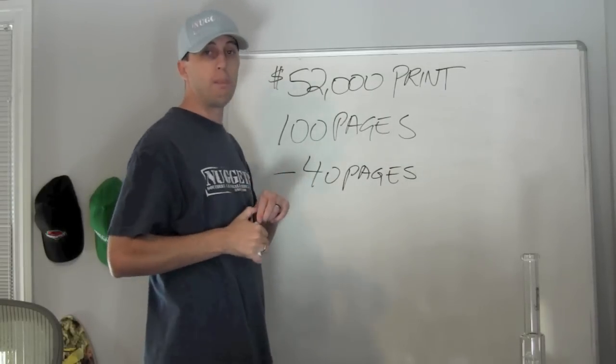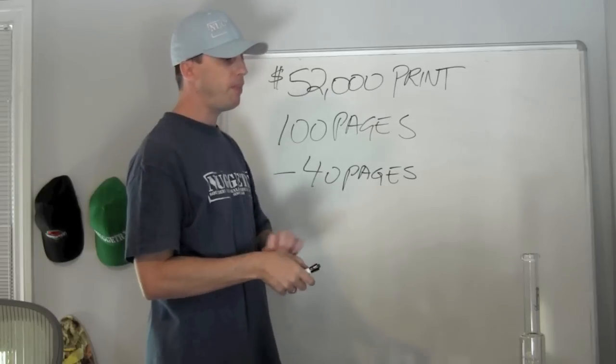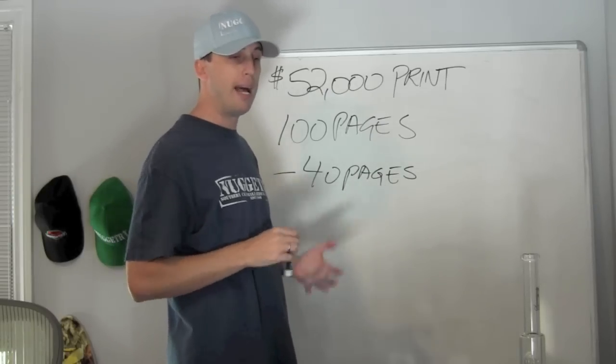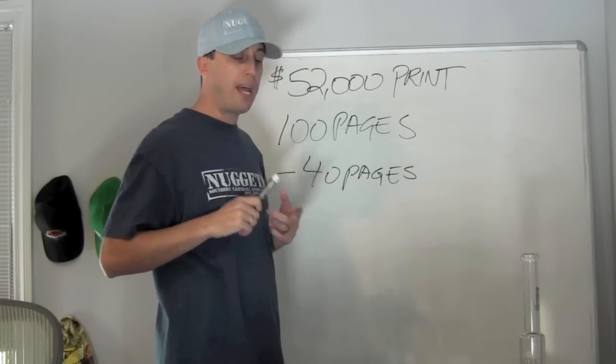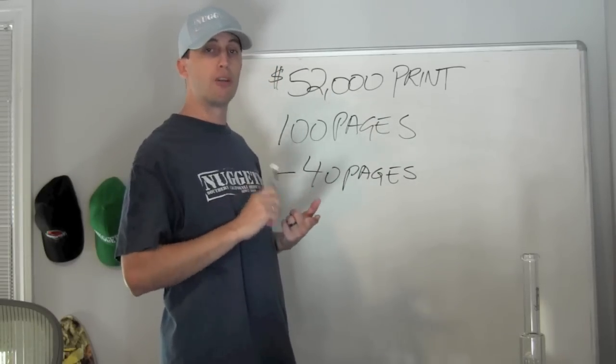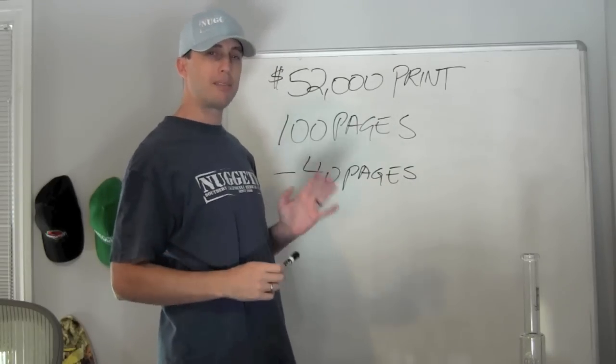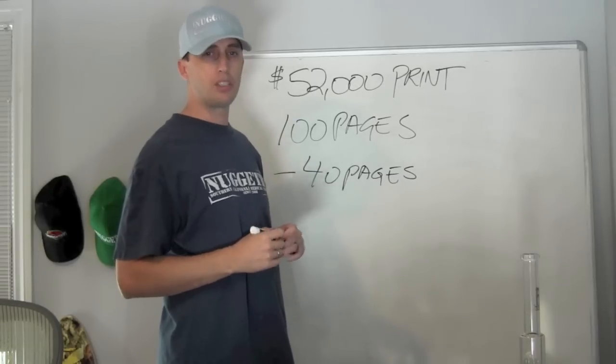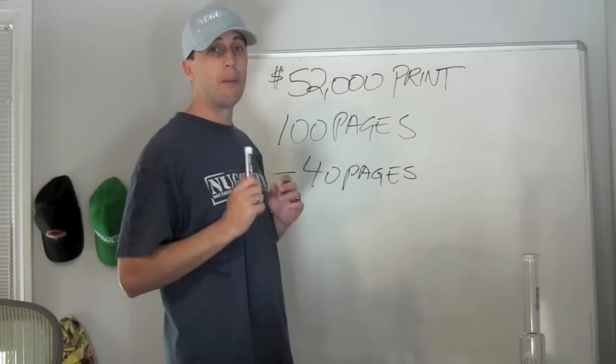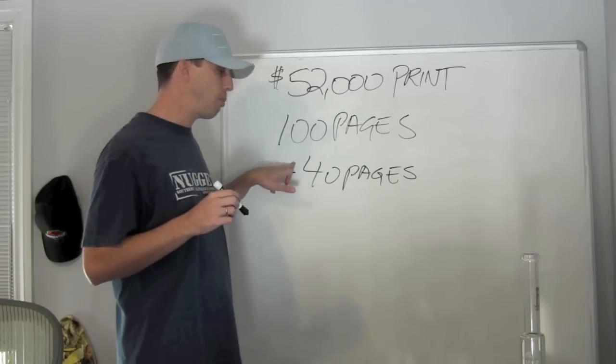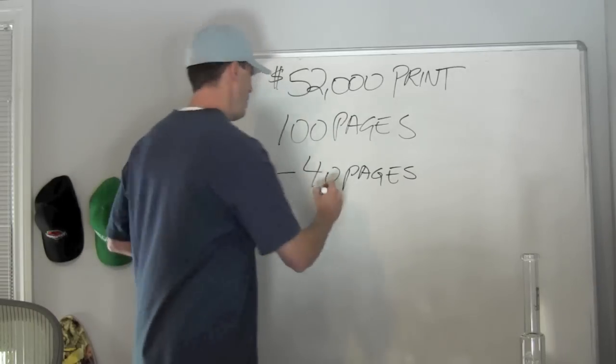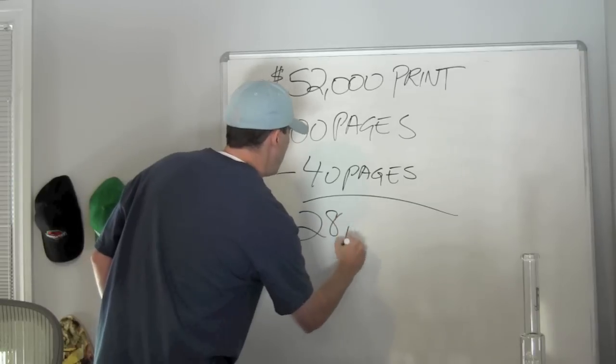We charge $1,000 for a full page ad. So you think we get $40,000 a month in ads, but we don't because most advertisers buy in bulk. They'll pay for a 3, 6, or 12 month package and they get a discounted rate. On average, we get about $750 per page, sometimes a little less, about $700 per page. $700 a page, 40 pages, that is $28,000 in advertising.